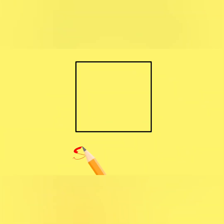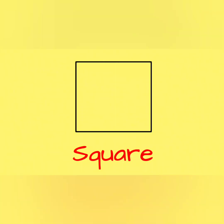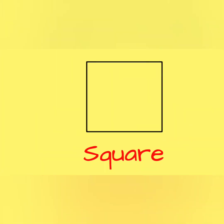Square. Repeat after me: square. Square has 4 sides. These 4 sides are equal — which means they are the same.